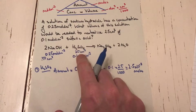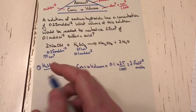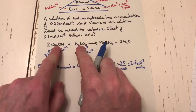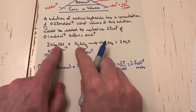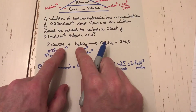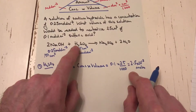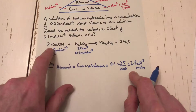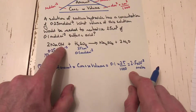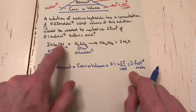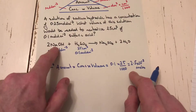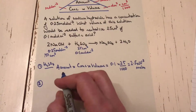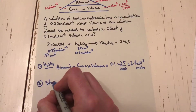In stage 2, I link the two substances using the balanced equation and stoichiometry. I can see that 1 mole of H₂SO₄ reacts with 2 moles of NaOH — that is the stoichiometry.